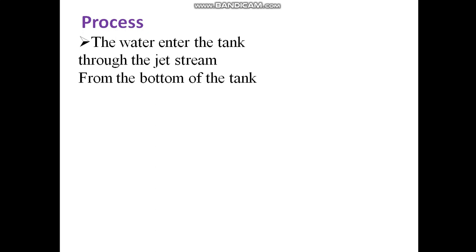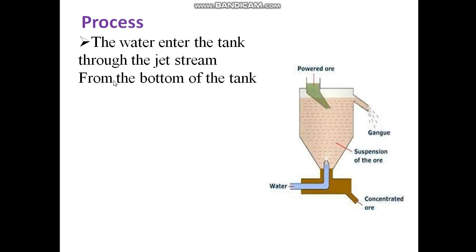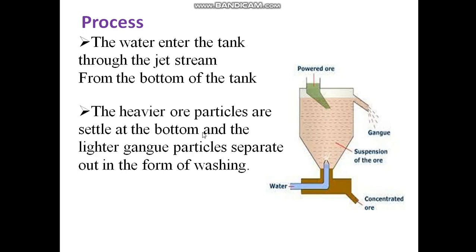The water enters the tank through the jet stream from the bottom of the tank. From the bottom we pass the water and from the hopper we pass the powdered ore. When we pass the water and the powdered ore, the heavier ore particles settle at the bottom and the lighter gangue particles separate out in the form of washing.